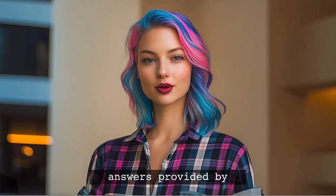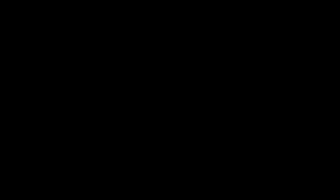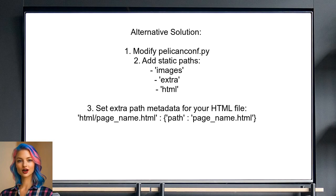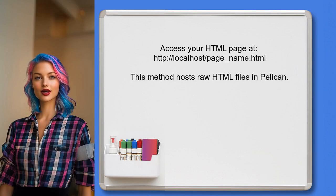Now let's look at the answers provided by other users. An alternative solution involves modifying the Pelican configuration file, pelicanconf.py. They suggest adding a static path based on your HTML file located in the content directory. This setup allows you to access your HTML page directly at the URL's root as pagename.html, effectively hosting raw HTML files in your Pelican static website.